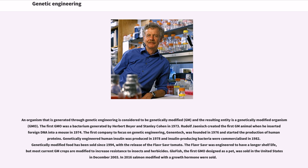The first GMO was a bacterium generated by Herbert Boyer and Stanley Cohen in 1973. Rudolf Janisch created the first GM animal when he inserted foreign DNA into a mouse in 1974. The first company to focus on genetic engineering, Genentech, was founded in 1976 and started the production of human proteins. Genetically engineered human insulin was produced in 1978, and insulin-producing bacteria were commercialized in 1982. Genetically modified food has been sold since 1994, with the release of the Flavor Saver tomato, which was engineered to have a longer shelf life. Most current GM crops are modified to increase resistance to insects and herbicides.